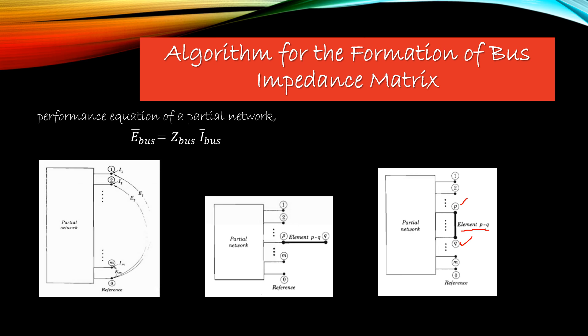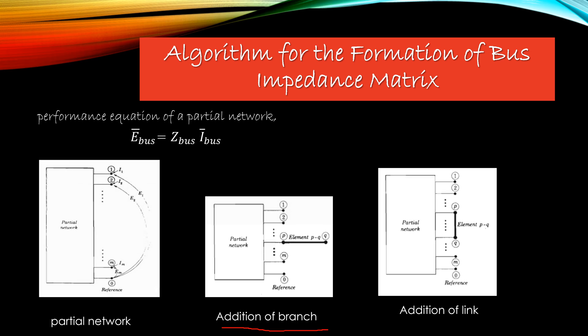With this idea, we are going to learn the algorithm for the formation of the bus impedance matrix. We are considering the first case: addition of branch. We are not considering addition of link in this video. Before starting the derivation, we need to assume that the Z_bus for our partial network is known.